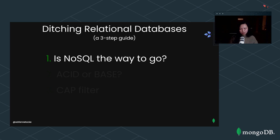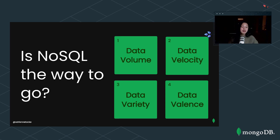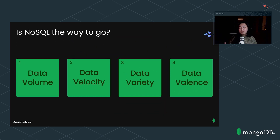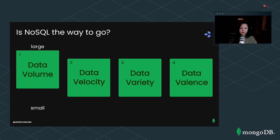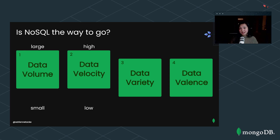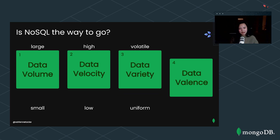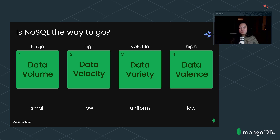So, is NoSQL the way to go? We need to take a look at our data — specifically four characteristics: data volume, data velocity, data variety, and data valence. As a good rule of thumb, if you have a large data volume, a high data velocity, volatile data variety, and a high data valence, then you're probably good to go with NoSQL.